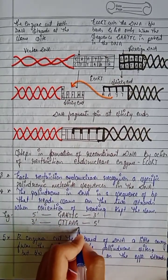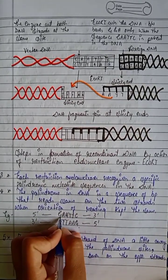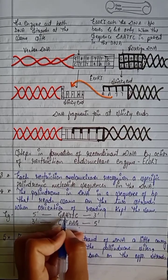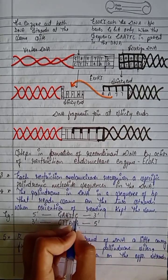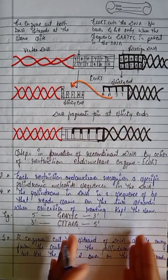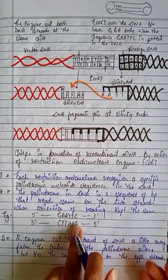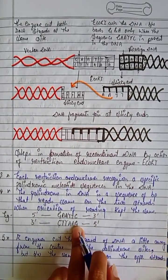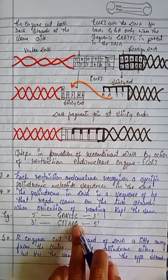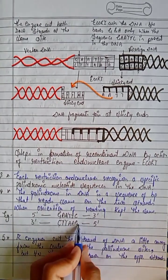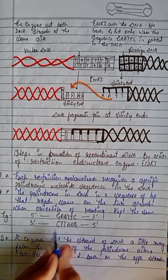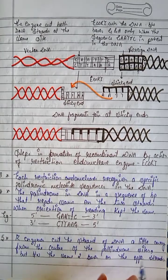So here, both strands read GAATTC. The second strand, which is the complementary sequence, also reads GAATTC. This is called a palindromic sequence.